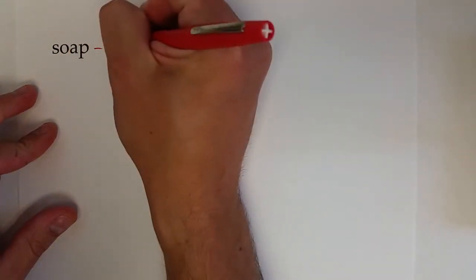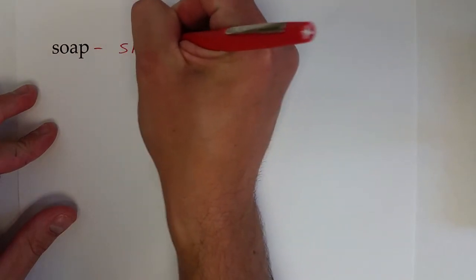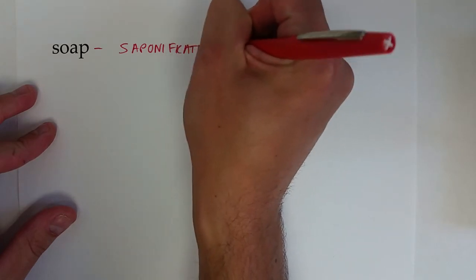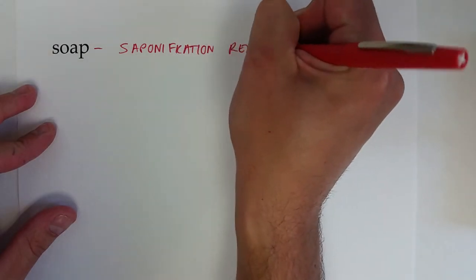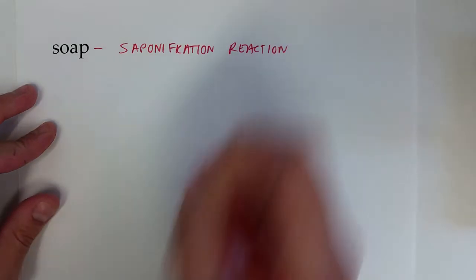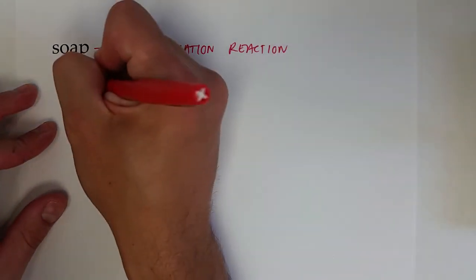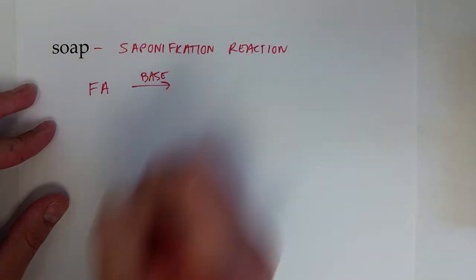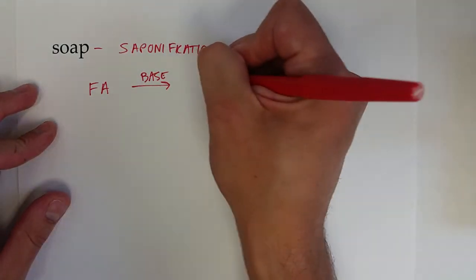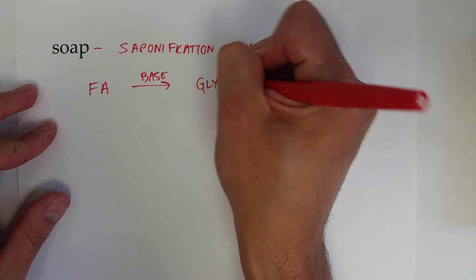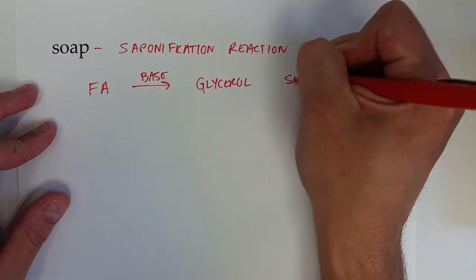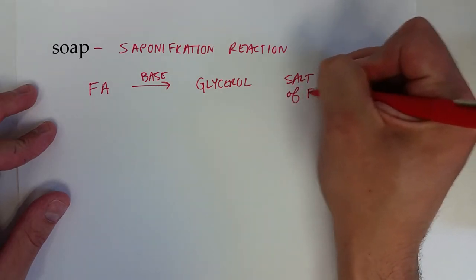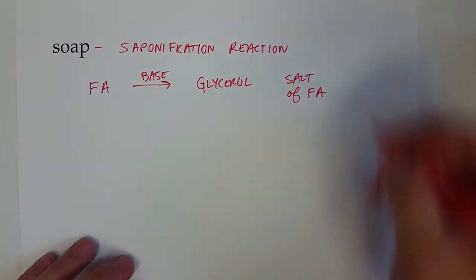And so all we're going to do is we're going to treat a fatty acid with a base to produce glycerol and then a salt or an ionic compound of the fatty acid. And that salt of the fatty acid is actually what we can refer to as soap.